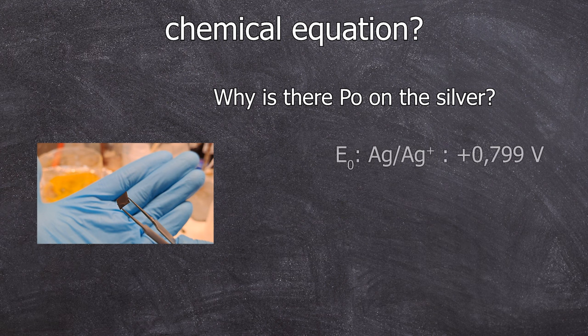Now the standard potential for silver is known to be 0.79 volts and polonium would accordingly need to be above 0.79 volts. But that's not true because we are working not in water, but in hydrochloric acid. And there you have a new redox pair for the silver with a standard potential of just 0.22 volts.